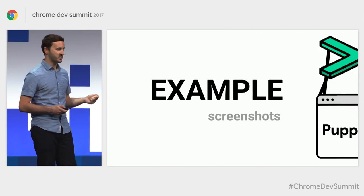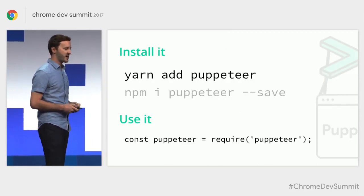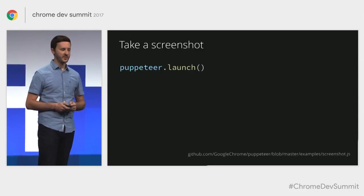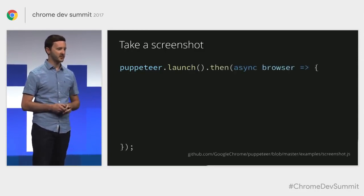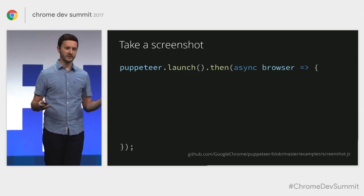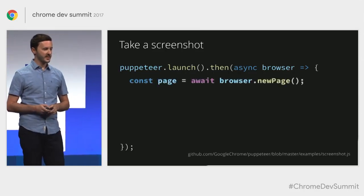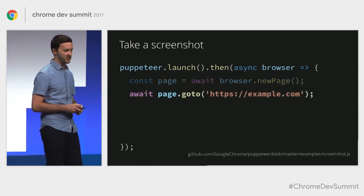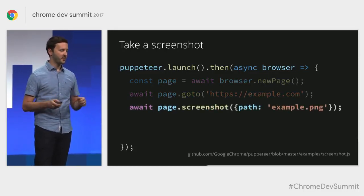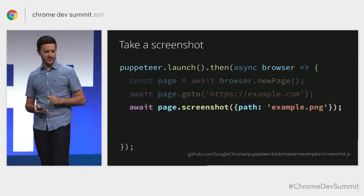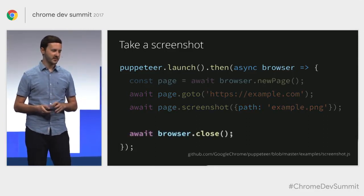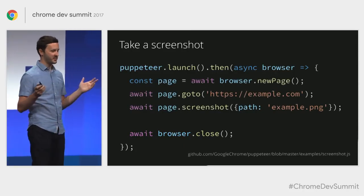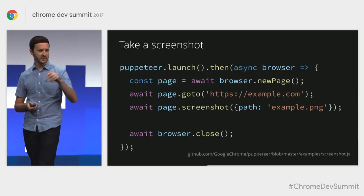Let's see some cool examples. First is screenshots — a really common case. Grab Puppeteer off npm and require it in your script. First you launch the browser with puppeteer.launch, which returns a promise giving you a browser instance. By default it launches headless Chrome — no configuration needed. Next, create a new page using that browser instance. Everything is a promise, so you'll see async and await. Navigate to example.com, then call page.screenshot — that actually creates a screenshot and saves it to disk as example.png. Last but not least, close the browser. In literally five lines of code, we've opened Chrome on any platform, generated a screenshot, and we're off to the races.